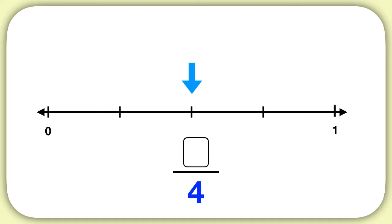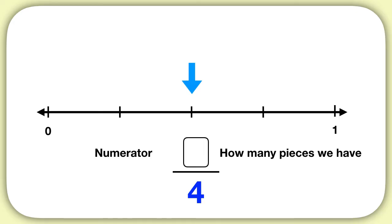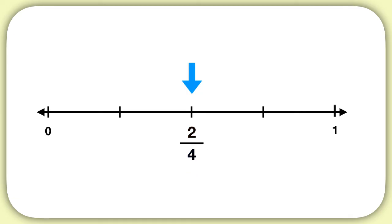Now let's find our numerator — the number on top — which tells us how many pieces we have. How many pieces are there up until we reach our arrow? There is 1 piece, 2 pieces, and then we reach our arrow. So our numerator is 2. This dash represents the fraction 2 fourths.